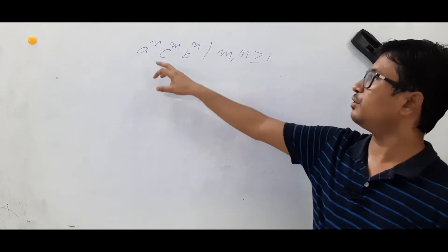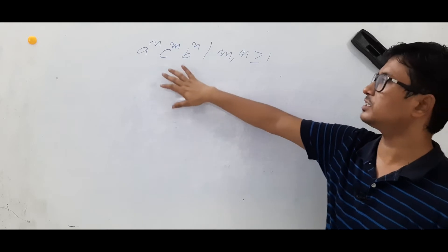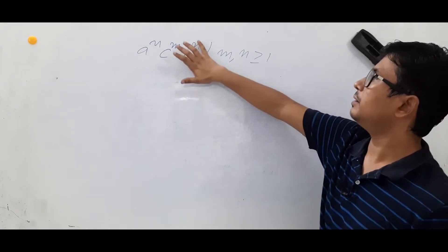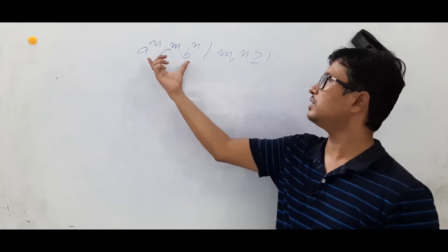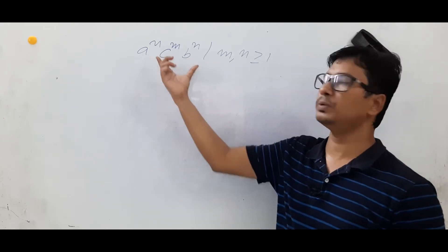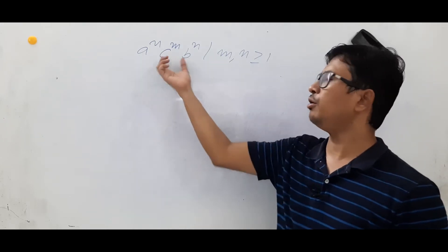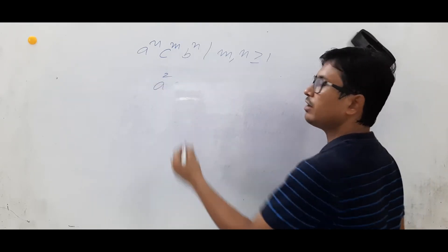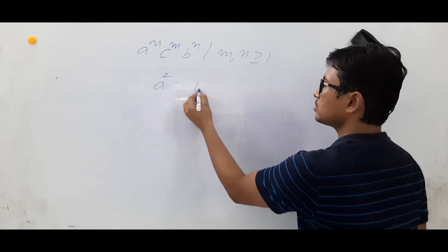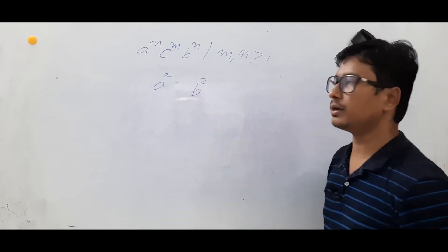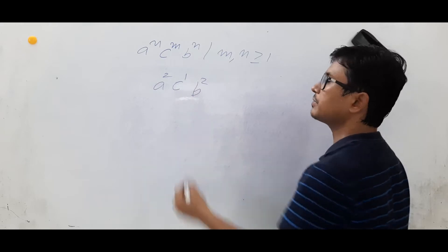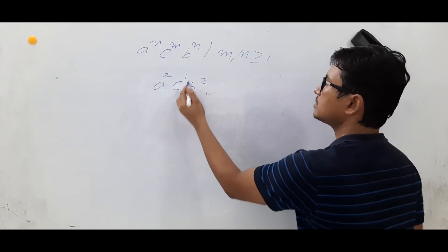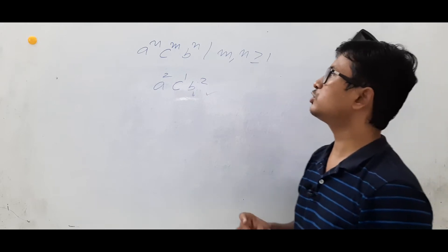The language is in the form of a^n c^m b^n. The meaning is that the number of a's should be equal to the number of b's, and any number of c's can appear. For example, taking n=2, the number of a's equals the number of b's, and taking m=1, this string belongs to this language.